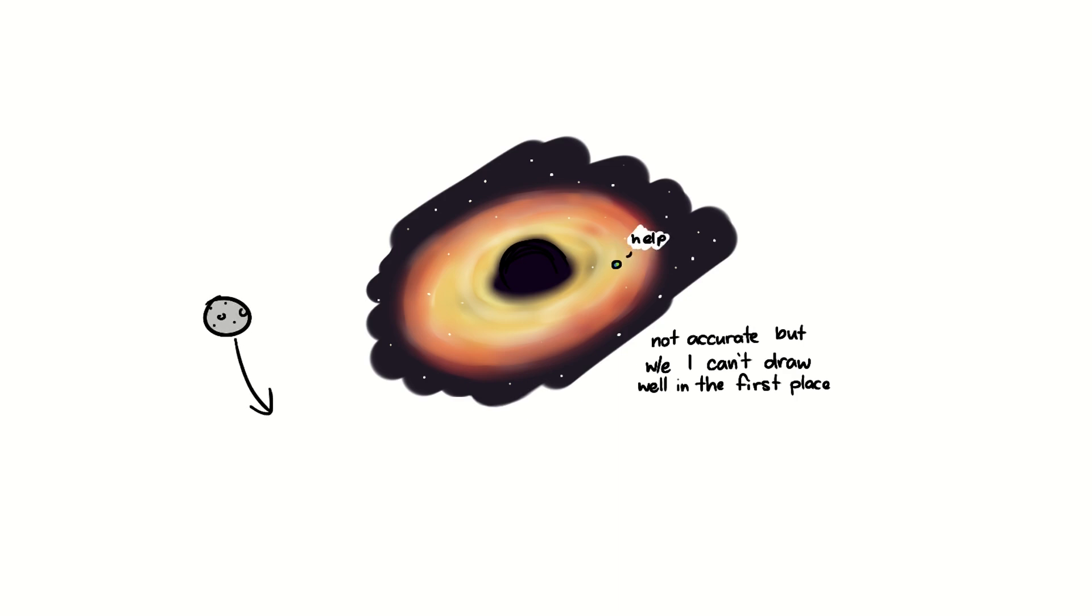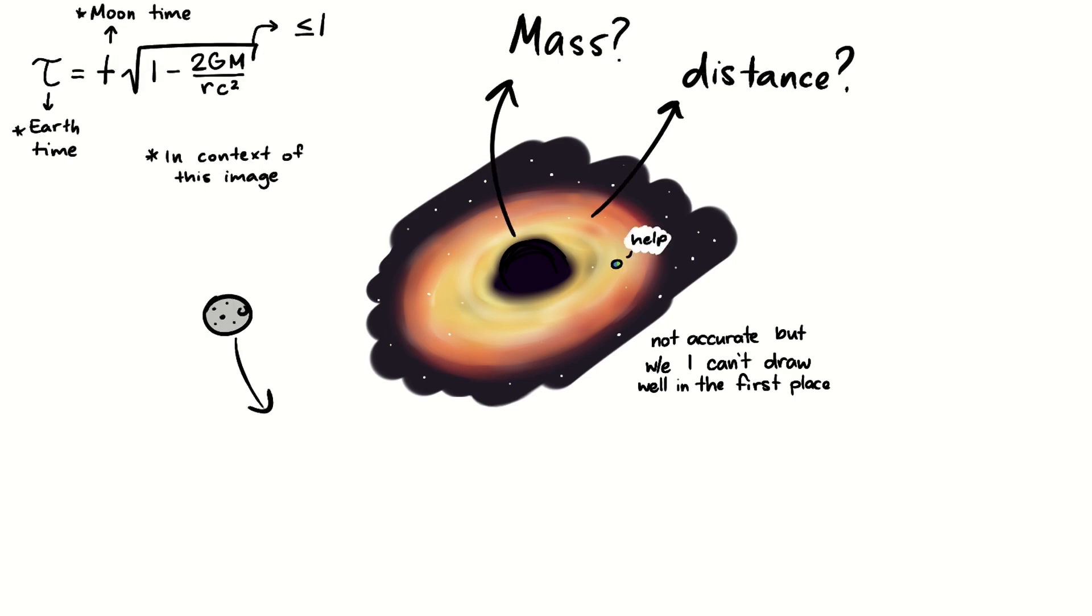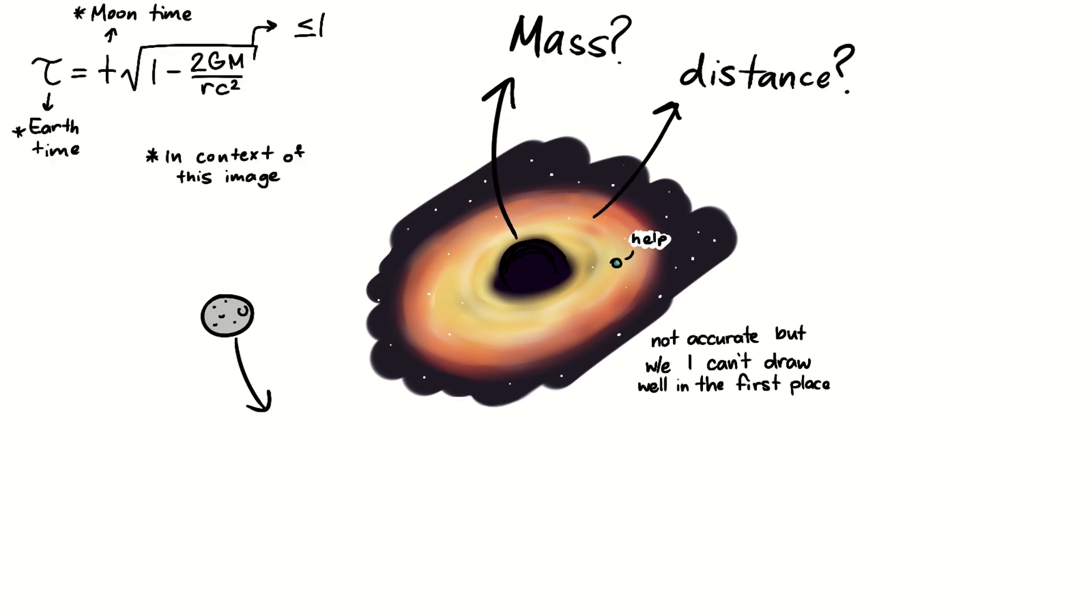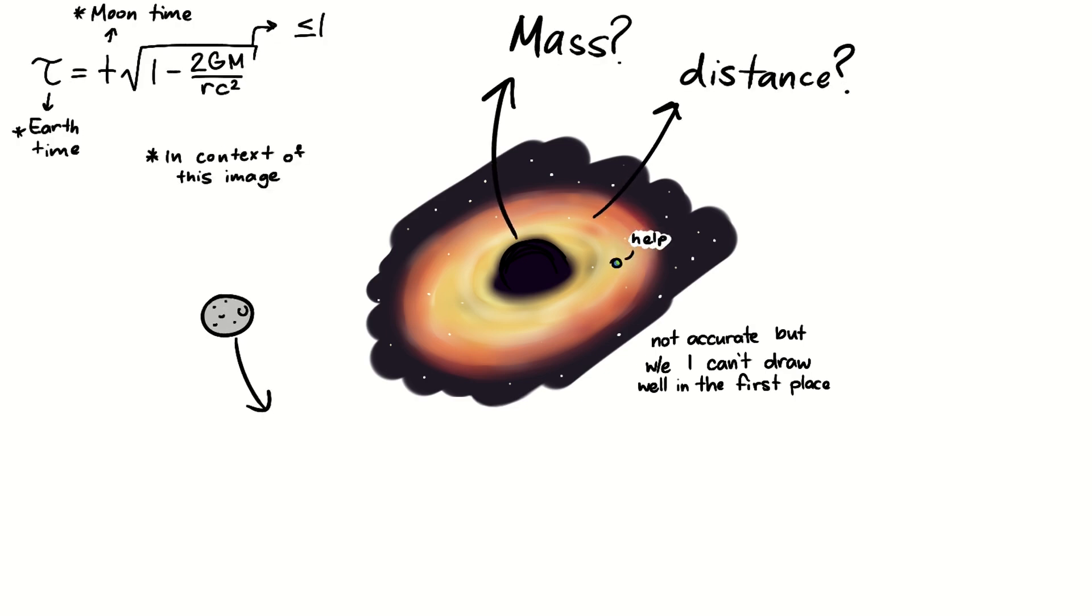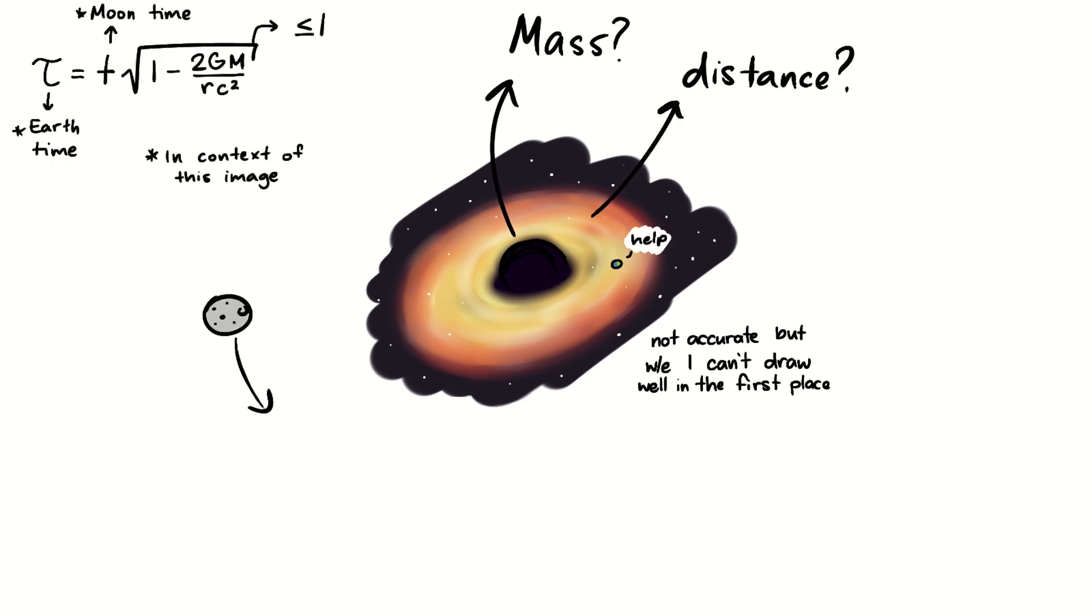And it just so happens that gravity also creates time dilation. Now, the exact numbers vary heavily on the size of the black hole formed and the proximity to the black hole, but since the moon would be much further away than the Earth, time would pass much more slowly than it would on the moon, meaning you could potentially speedrun your life in what seems like a few hours on Earth.